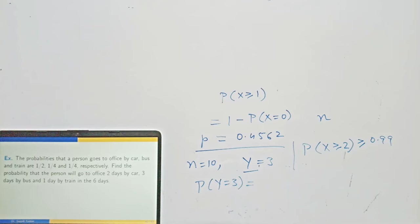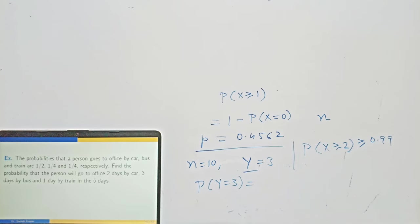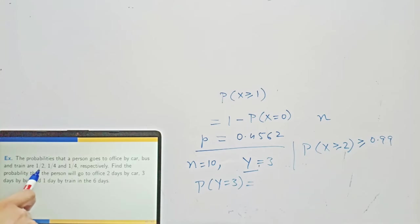Example on multinomial distribution: The probability that a person goes to office by car, bus, and train are 1/2, 1/4, and 1/4 respectively. Find the probability that the person will go to office 2 days by car, 3 days by bus, and 1 day by train in 6 days. There are three possible outcomes per trial, so it is the case of multinomial distribution with n = 6, x1 = 2, x2 = 3, x3 = 1, P1 = 1/2, P2 = 1/4, P3 = 1/4. Use the multinomial distribution formula to get the required probability.